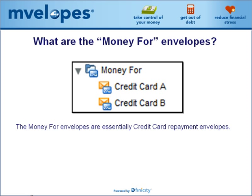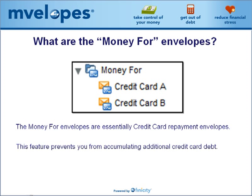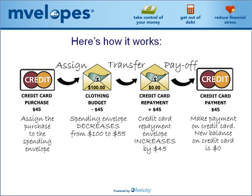This unique feature also prevents you from accumulating additional credit card debt as long as you spend from within your envelope balances. Here's how it works. First, I'll assign a credit card purchase to my clothing envelope. However, because I haven't spent my own income, the system will reallocate the value of the credit card purchase from my clothing budget envelope into my credit card repayment, or money for credit card, envelope.